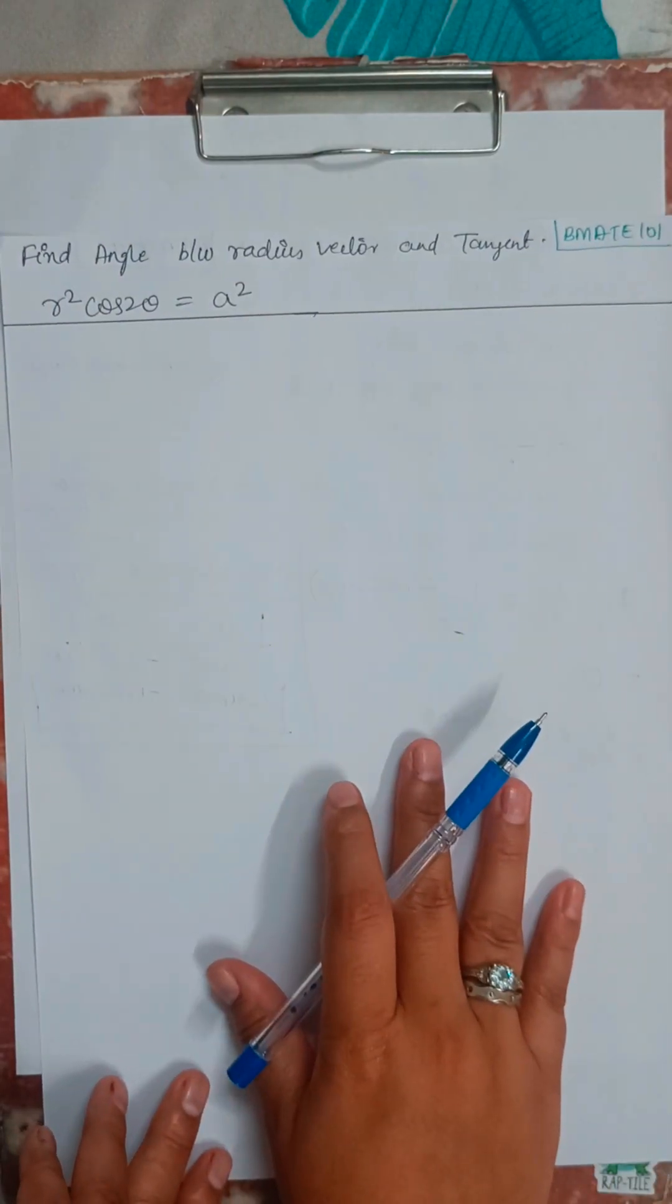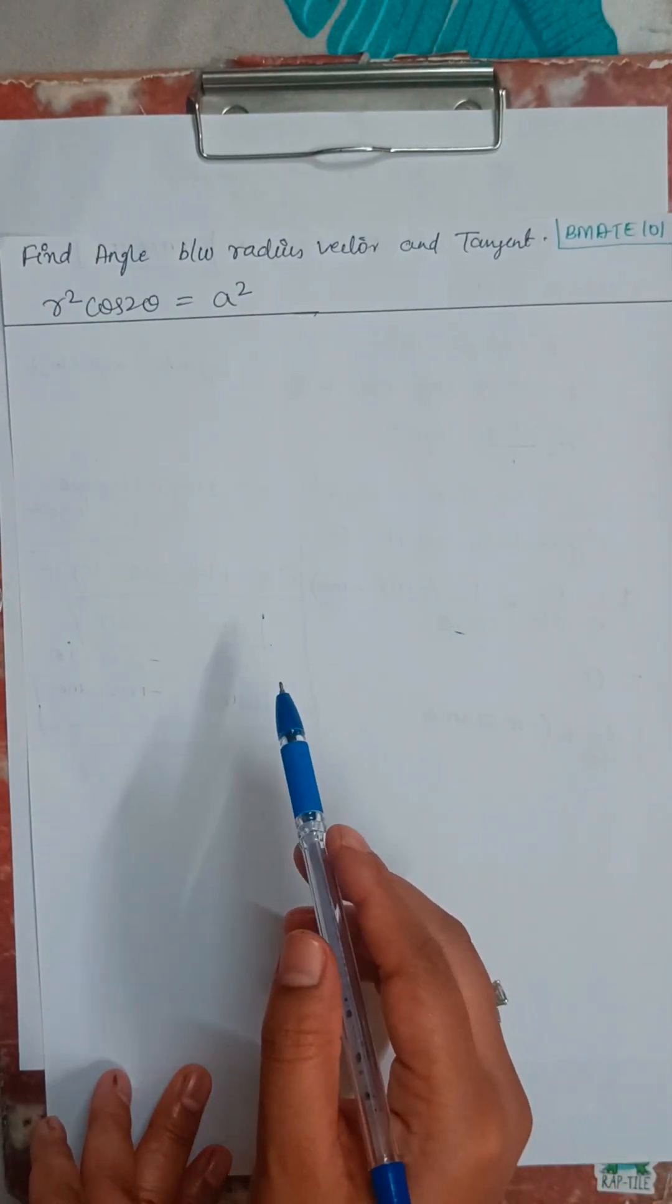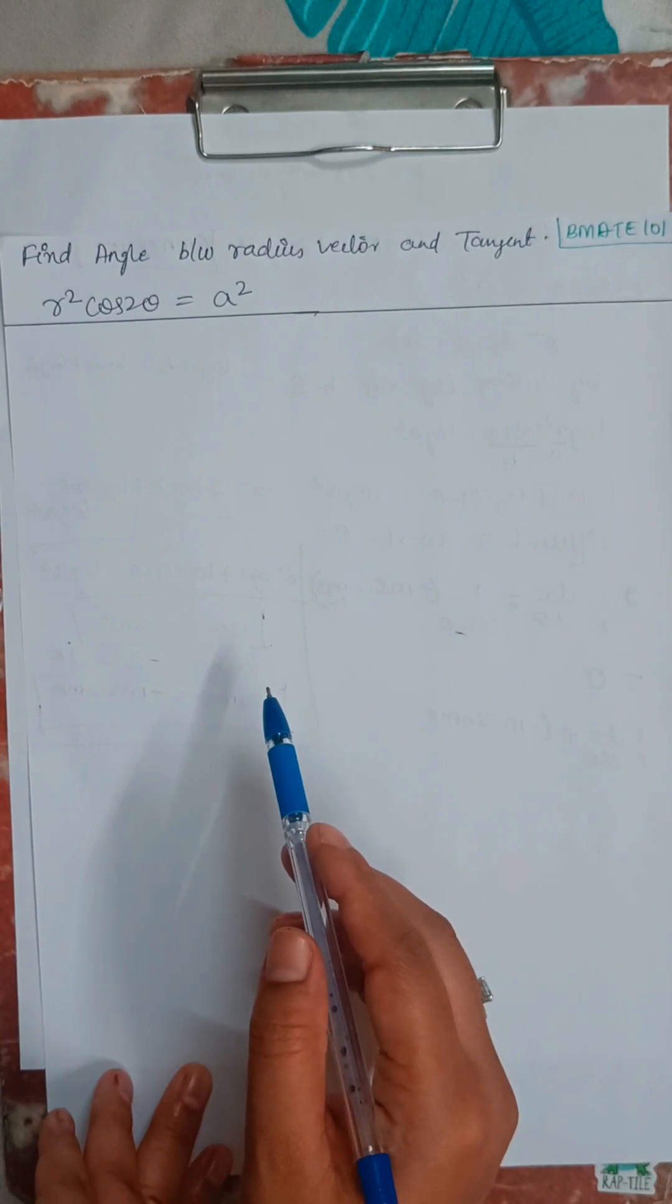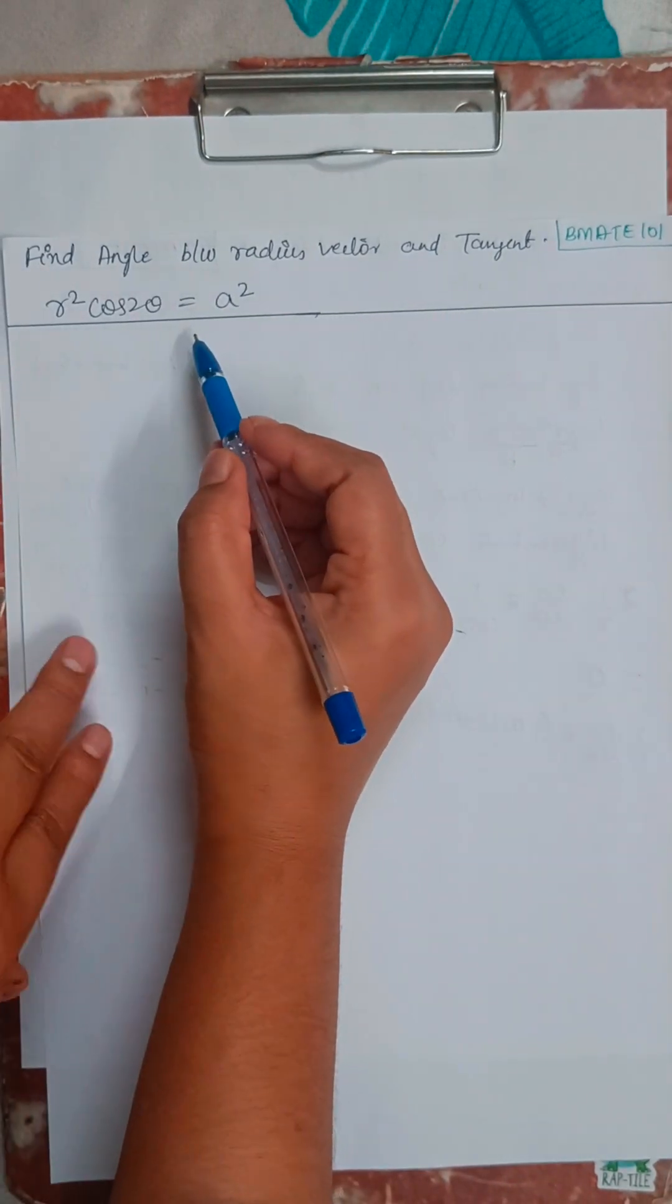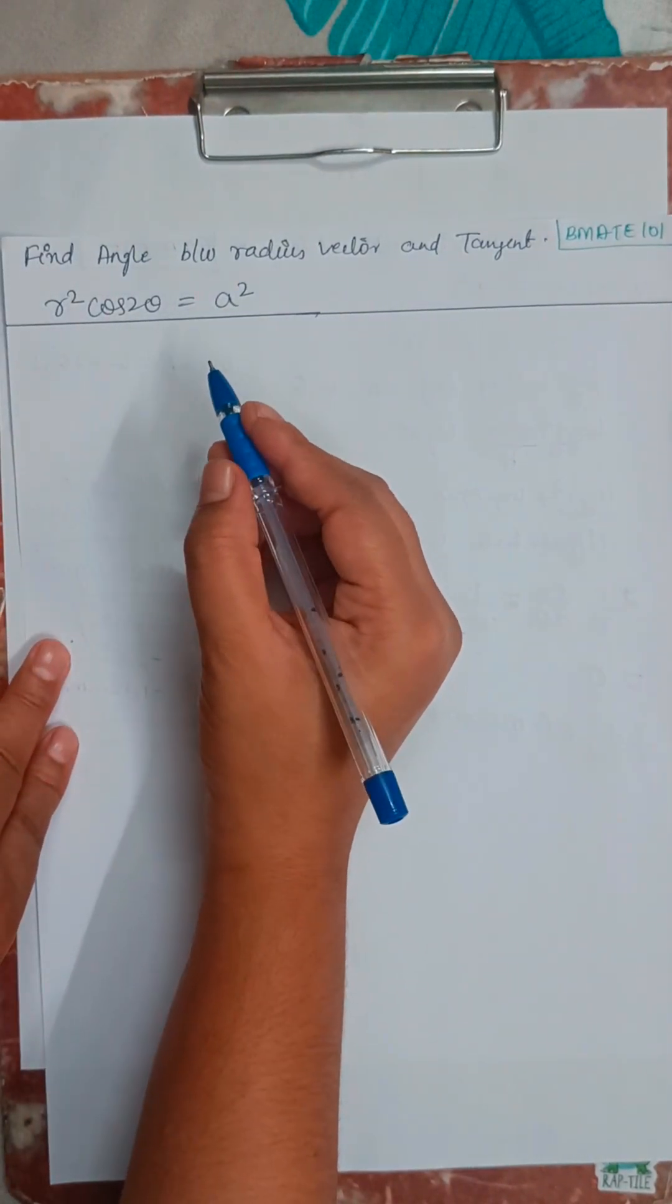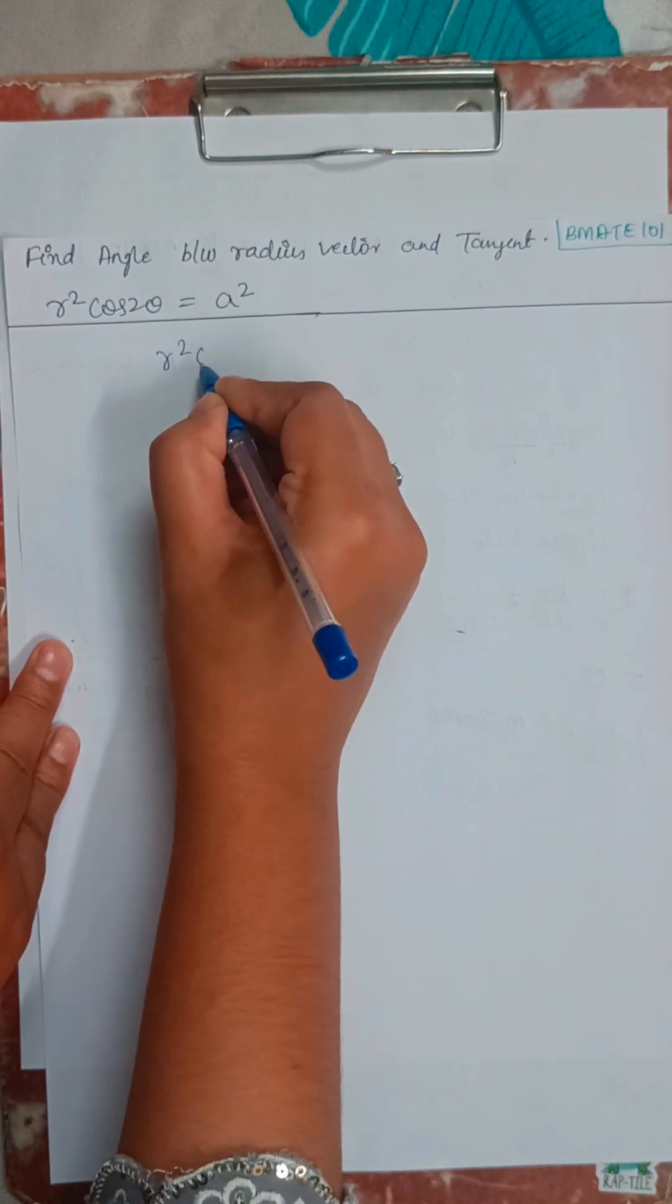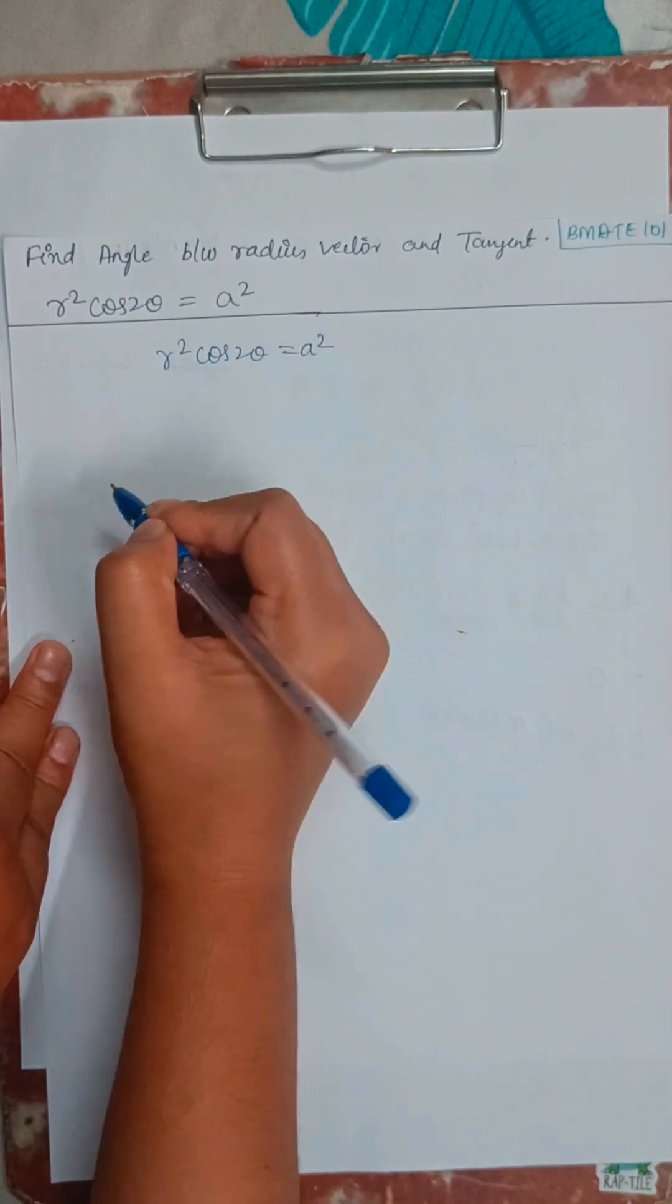In this video, we will be finding out the angle between radius vector and tangent of this equation: r squared cos 2 theta equals a squared. So I will write it down. r squared cos 2 theta equals a squared.